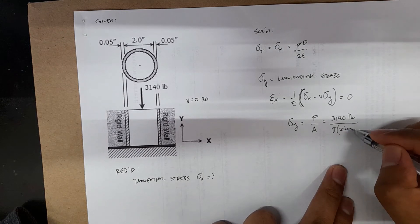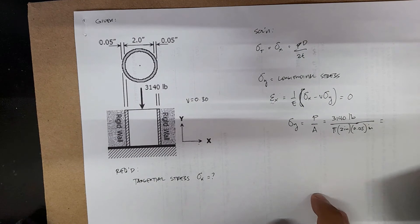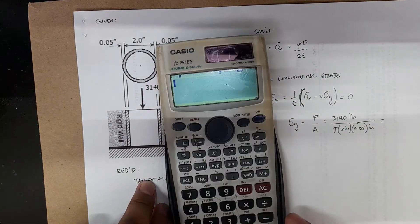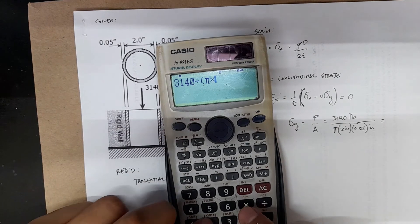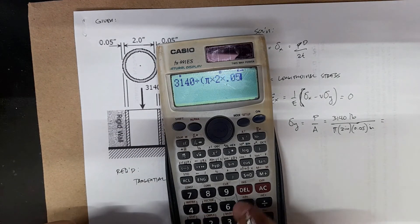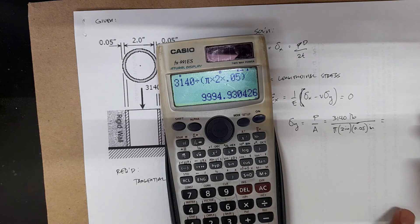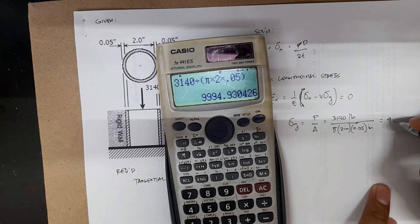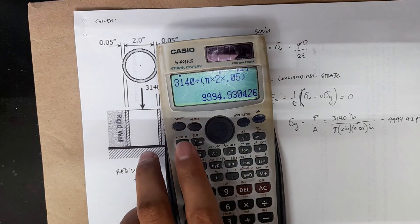So stress y equals 3,140 divided by pi times 2 times 0.05, which gives us 9,994.93 psi. That's your stress y.